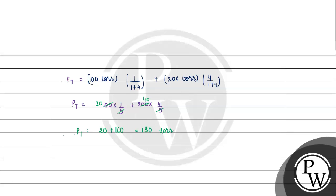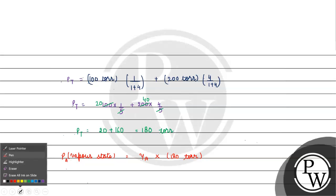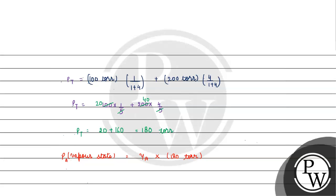Now our question asks for the vapor pressure of the distillate. For this we need the mole fractions in the vapor state. The mole fraction of A in the vapor state equals PA divided by total pressure. PA = 100 × (1/5) = 20 torr. So mole fraction of A in vapor state = 20/180 = 1/9.